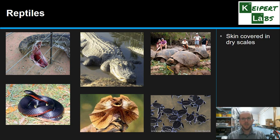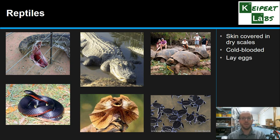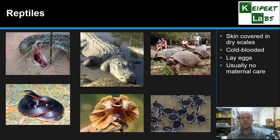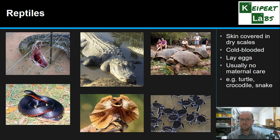After birds we have reptiles. Reptiles have skin covered in dry scales instead of feathers, fur, or hair. They are cold-blooded, meaning they can't regulate their temperature internally — they rely on their environment. That's why reptiles spend a lot of time sunning themselves to warm up. This also means they don't need to eat as regularly because they conserve energy better. They lay eggs — leathery or hard-shelled — with a waterproof coating that helps them survive where they're laid. There is usually no maternal care for reptiles once the eggs are laid. Turtles, crocodiles, and snakes are all examples of reptiles, and they may be land-based, water-based, or a mix of both.